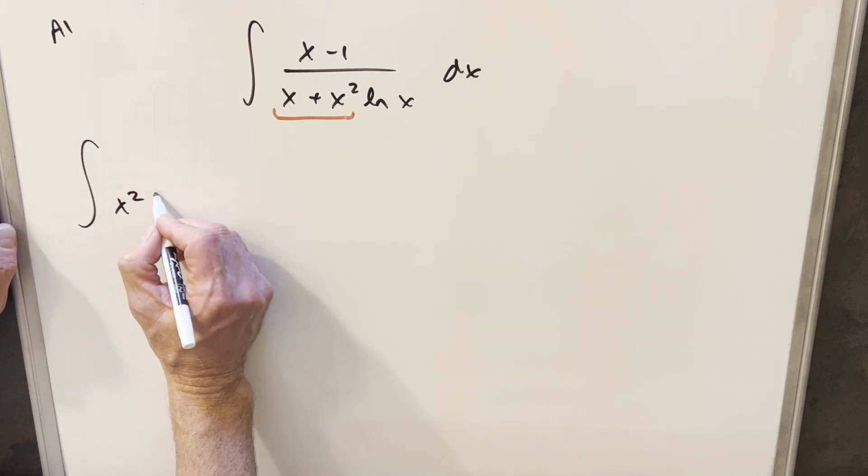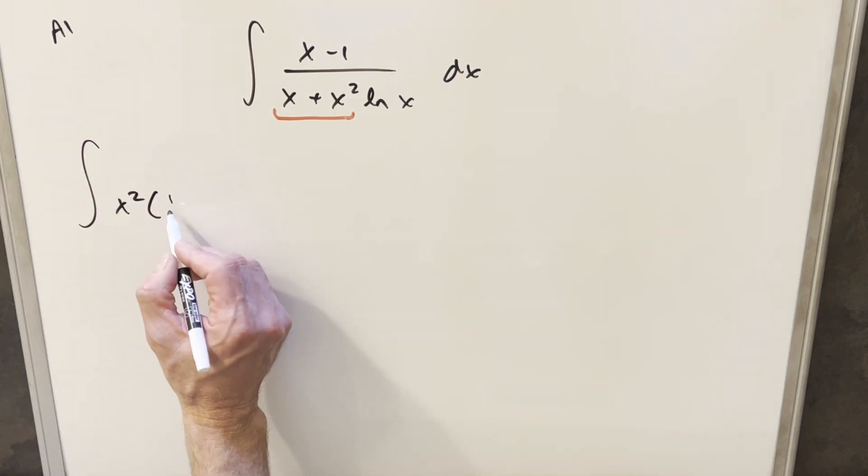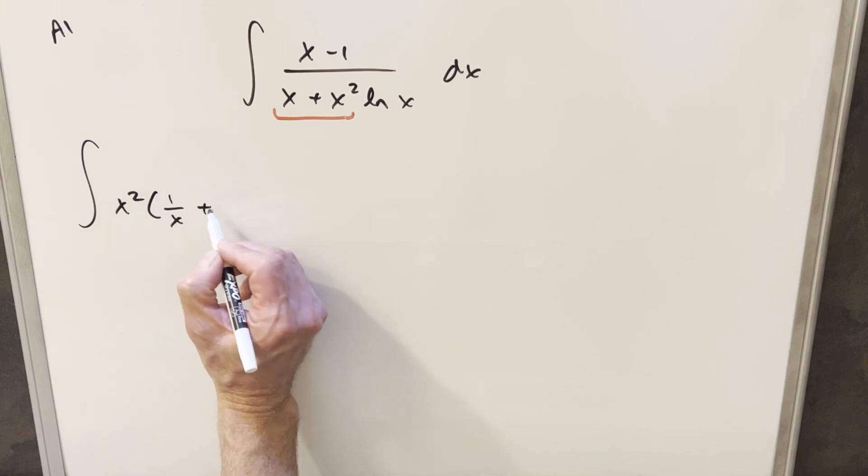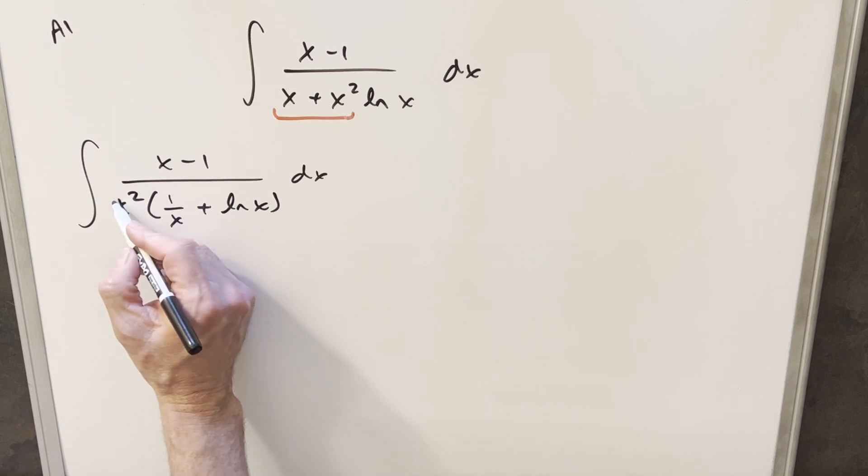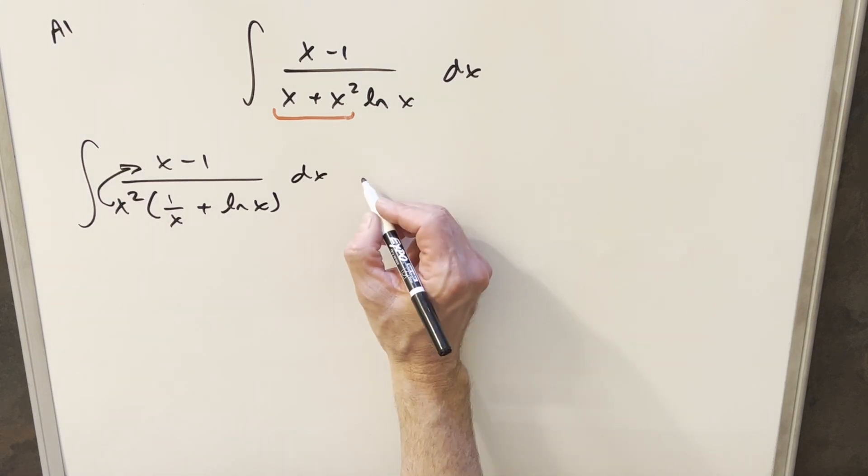So I'll just factor x squared out in the denominator. This will give me 1 over x for the first term and the second term is just going to be natural log of x. But then what I want to do is just divide this into the numerator.